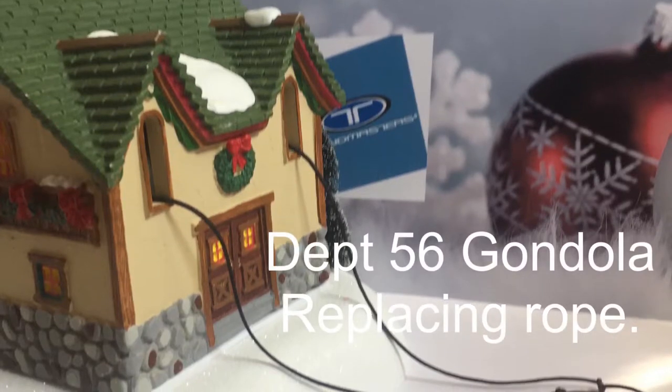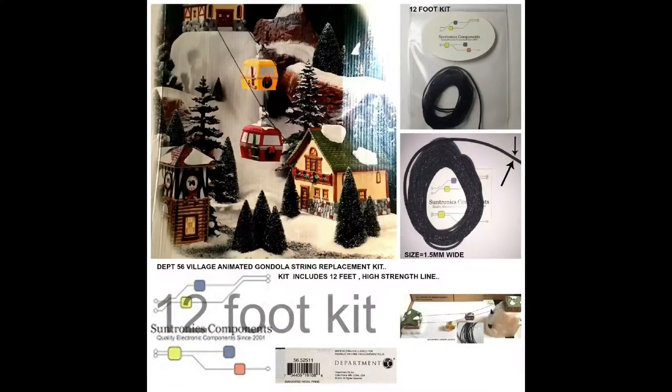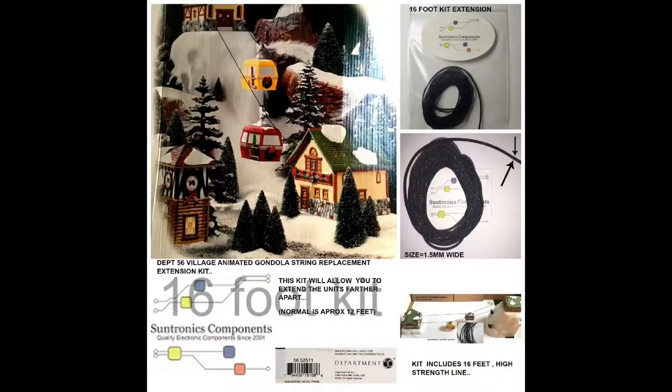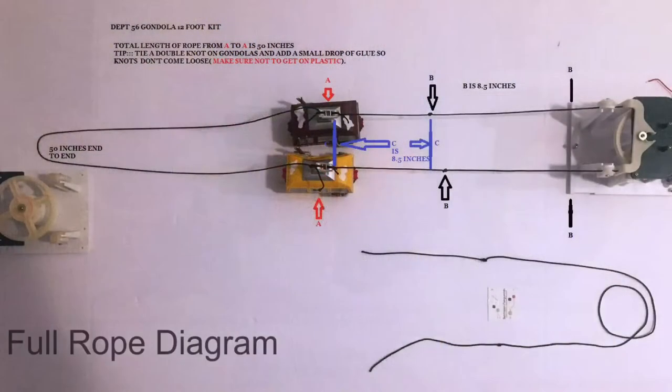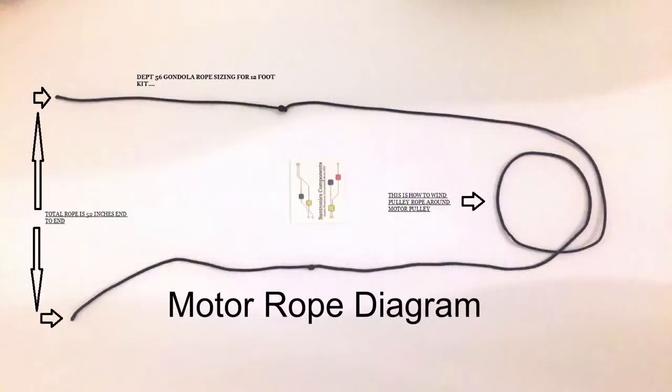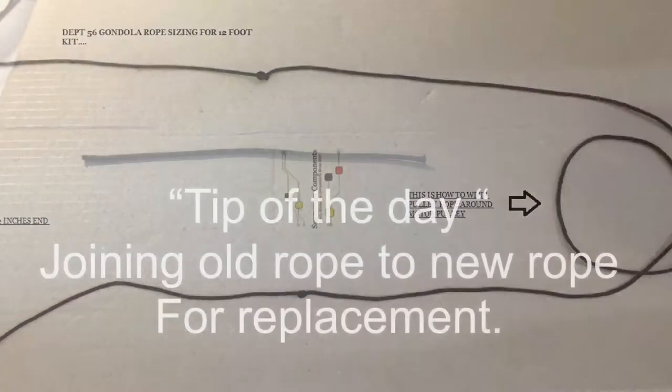Thank you for joining us. Department 56 gondola re-roping. We have two kits, our 12-foot regular kit and our extended kit which is 16 feet. We have two diagrams, a full rope diagram and our motor housing diagram. Let's get started.